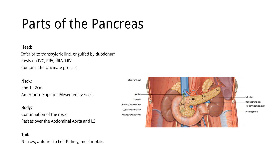The head rests on the inferior vena cava, the right renal vein, the right renal artery, and the left renal vein. The head contains the uncinate process — this big projection right here. The uncinate process is a continuation of the head, but pay attention that this process is not from the same embryological origin as the rest of the pancreas.